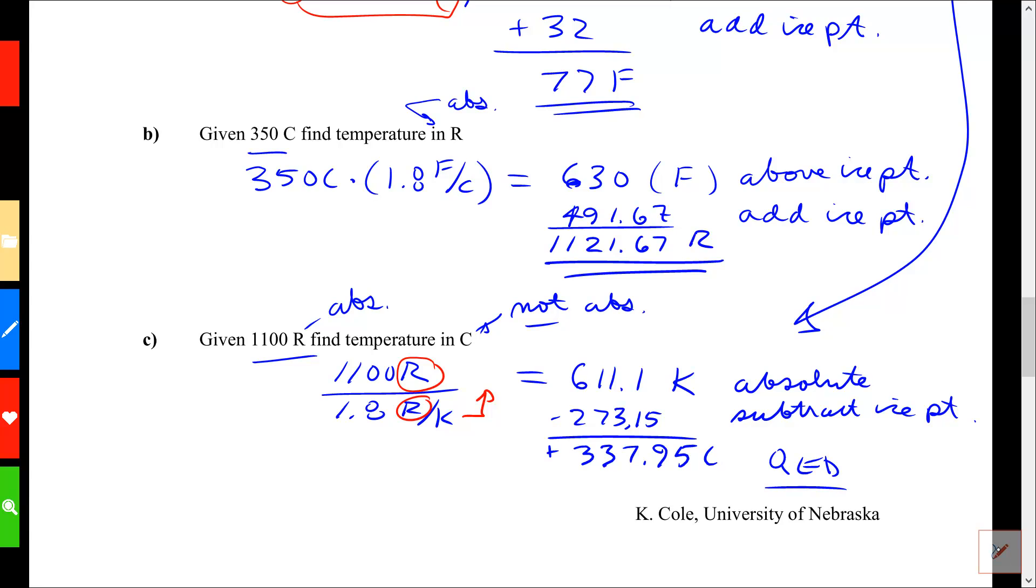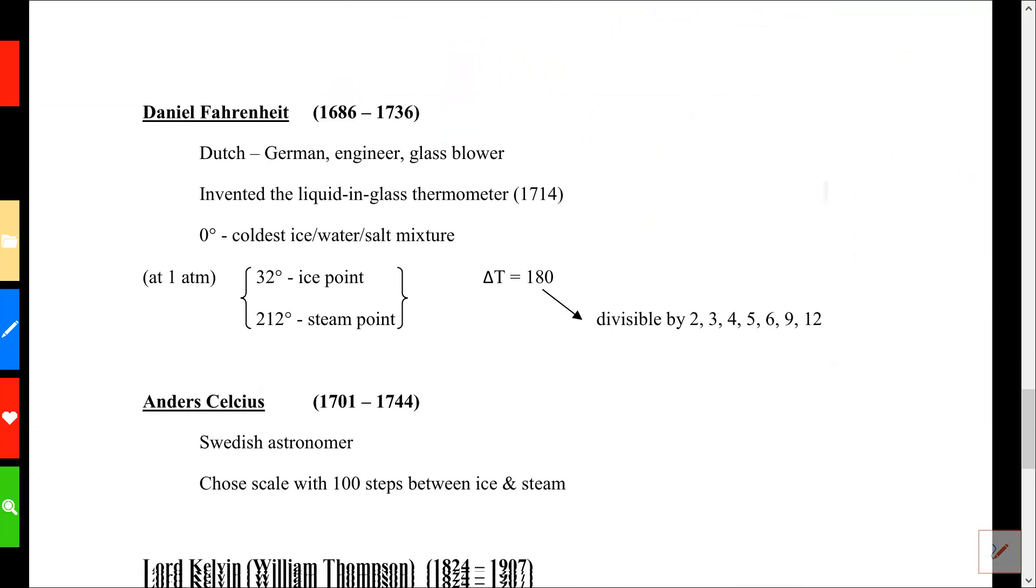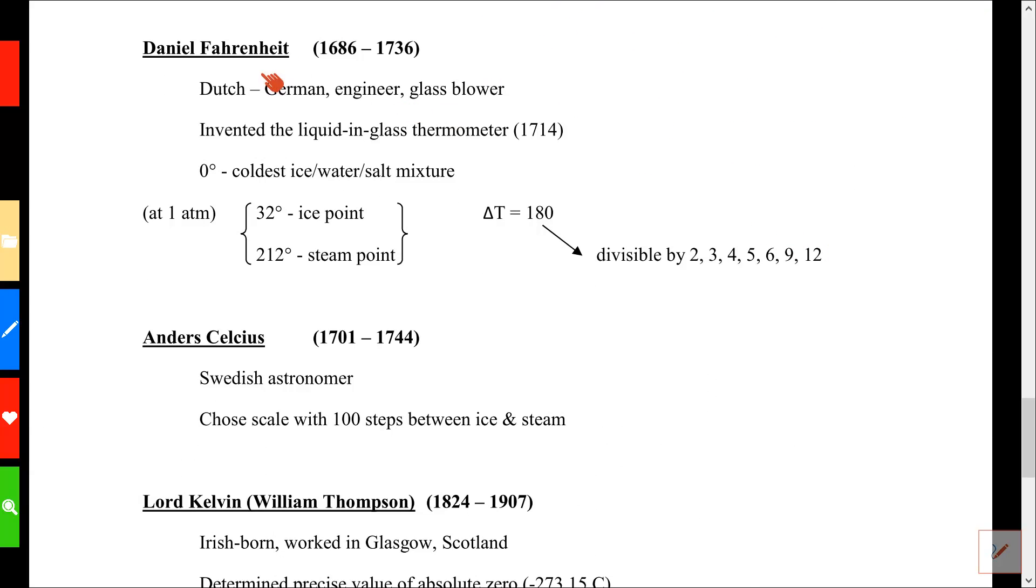Before we stop, I want to look at where these names came from for our temperature scales. The Fahrenheit scale is named for Daniel Fahrenheit. A Dutch-German fellow was a glass blower who invented the liquid and glass thermometer. Now, he chose his zero point as the coldest temperature he knew. He didn't have a mechanical refrigerator. He could make something cold by ice and water and salt together. Perhaps he liked making ice cream at home. And the fact that it's 180 degrees between the ice point and the steam point in the Fahrenheit system was because he liked 180. It was divisible by some integers. We may not have made that choice today.